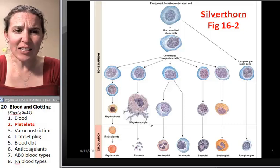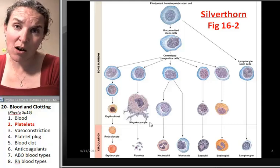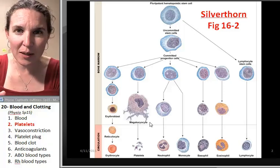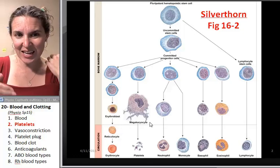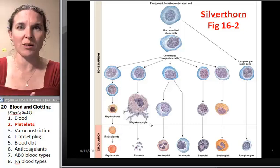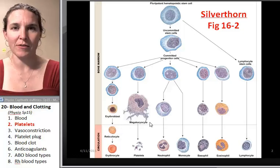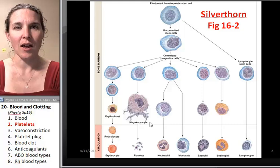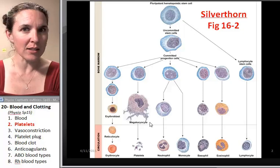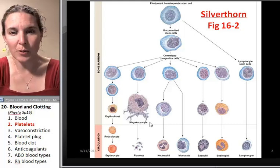And it actually tries to squeeze out of the bone marrow and into the bloodstream. And when it does that, the blood is rushing by and breaks off little pieces of megakaryocyte. And literally, the little pieces that broke off, those are platelets.